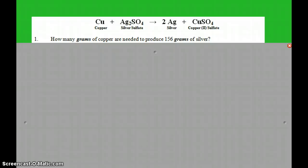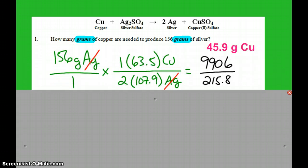So here I have another mass mass problem. How many grams of copper are needed to produce 156 grams of silver? And so here is the shortcut version I have set up. So I've got 156 grams of silver. And then on the bottom I have the silver information, and there is a 2 for the mole ratio times 107.9 from the periodic table. And then for copper, a 1 and 63.5 on the periodic table. And so again you can multiply across the top and the bottom and then divide. And that's how I got the 45.9 grams of copper.